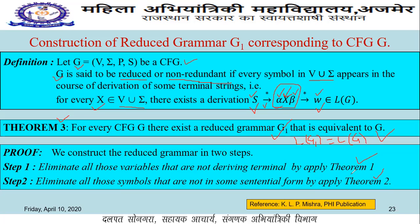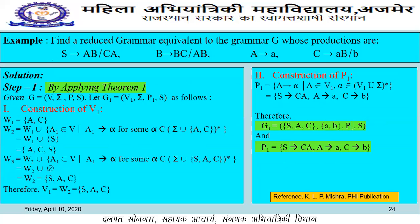Let us discuss all these with one example. Consider the grammar G having these productions. Accordingly, the other tuple components can also be described: sigma is the set of terminals containing small a and small b; the set of variables contains capital A, capital B, capital C, and capital S; and the starting variable is of course S.